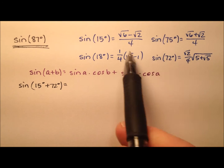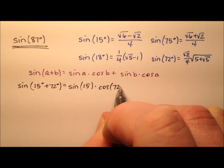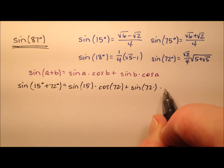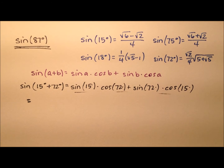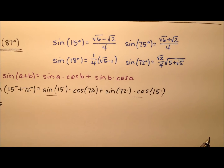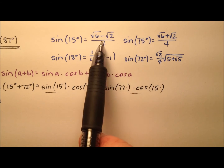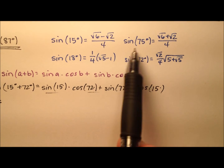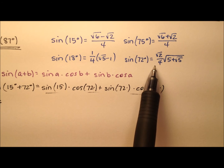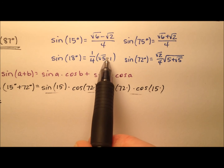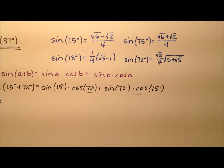Let's do this expansion. We have the sine of 15 degrees times the cosine of 72 degrees, plus the sine of 72 degrees times the cosine of 15 degrees. So we have four values that we need, and all four of them are shown here — the sine of 15, 75, 18, and 72 — which we have previously found in various videos, one video for each. You can find links to those videos in the description below.